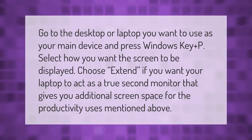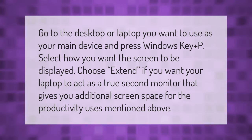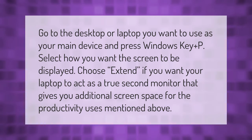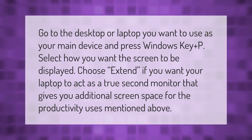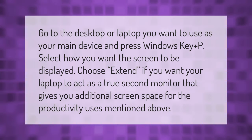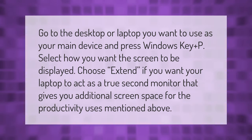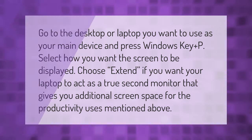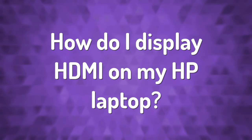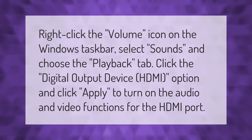Go to the desktop or laptop you want to use as your main device and press Windows key plus P. Select how you want the screen to be displayed. Choose Extend if you want your laptop to act as a true second monitor — that gives you additional screen space for productivity.